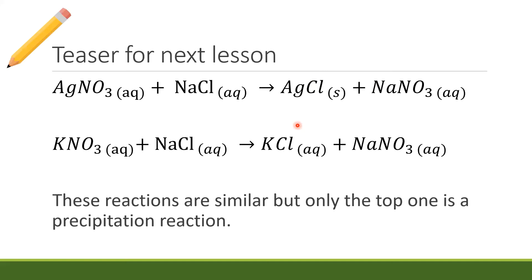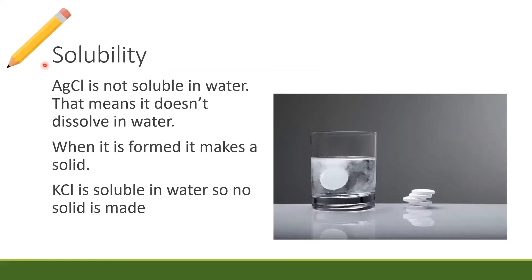These slides are available on the classroom for download. The last slide is a hint for next lesson: solubility is what we're going to talk about. AgCl is not soluble in water — it doesn't dissolve, so it has to form as a solid. There are lots of things that don't dissolve in water: glass, dirt, plastic. When you make AgCl, because it can't dissolve, it becomes a solid precipitate. KCl, on the other hand, is soluble in water, so no solid is made — it just dissolves and that's it.